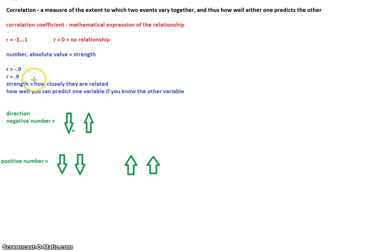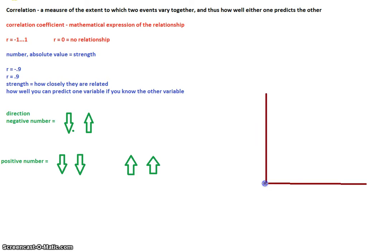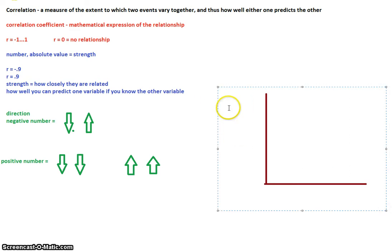So if you have a correlation coefficient, you're able to tell: do they move in opposite directions, or do they always move in the same direction? And how closely are they going to move together? The easiest way to see that is through a scatter plot. So a scatter plot looks something like this — if you have a graph and you are going to plot points on it, we'll use exercise and weight as our example.